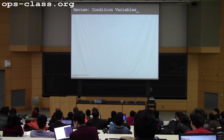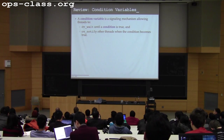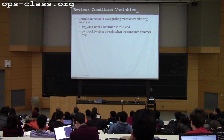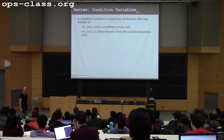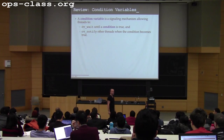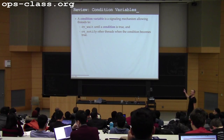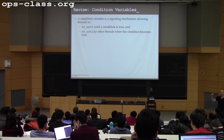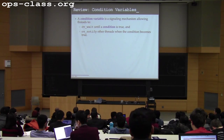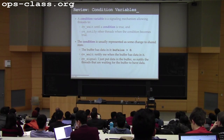Condition variables are a signaling mechanism. They allow threads to wait until something is true, and inform other threads when the condition has changed. CV wait and CV notify — CV notify and CV broadcast don't necessarily understand what's happened to the condition, but they trigger other threads to wake up and check if what they've been waiting for has happened. The condition is usually represented by some change to shared state.